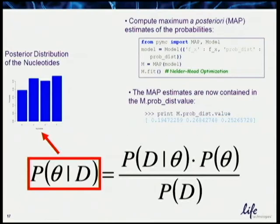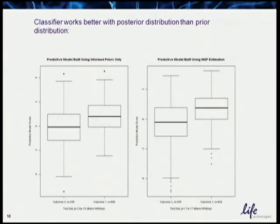To show that this strategy does something: over here I have a classifier built purely on my prior knowledge, and over here a classifier built with the Bayesian inference output — my prior knowledge plus seven data points. You can see this one separates the two sets a little bit better. And if you add more data points, the separation becomes much wider.